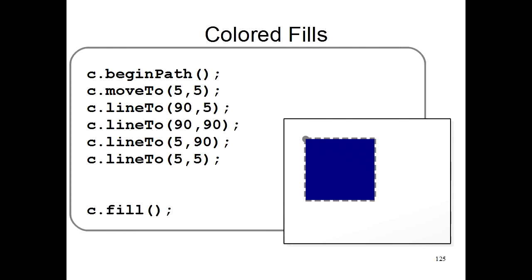It's fairly easy to fill in the shape with different colors too. You just use the c.fillStyle command and then the color you want the computer to use. Here we'll use red, and the computer will draw a red square. It's just like the c.strokeStyle command we looked at before, except for fills.